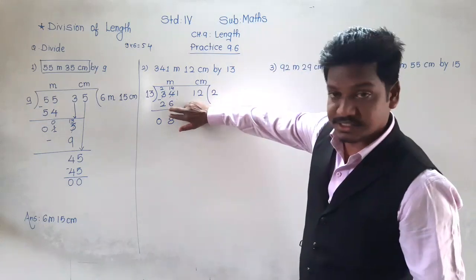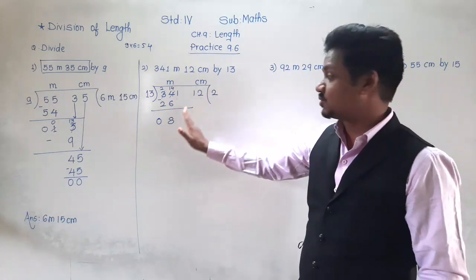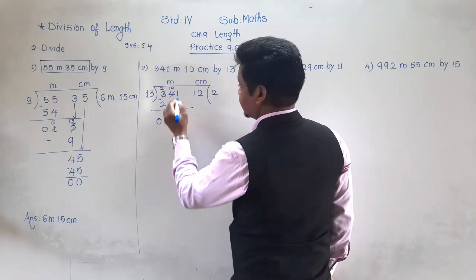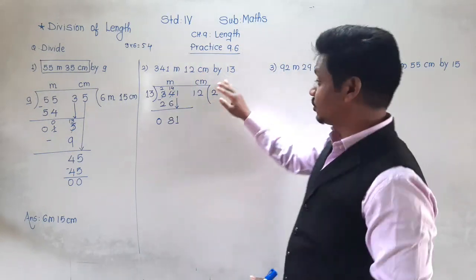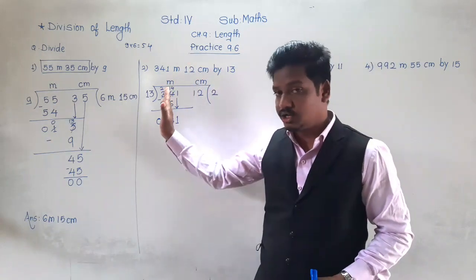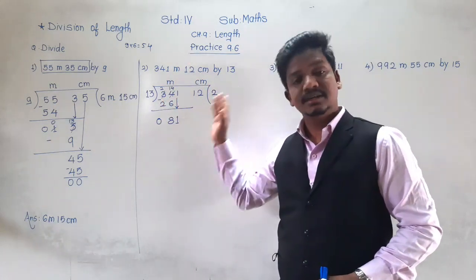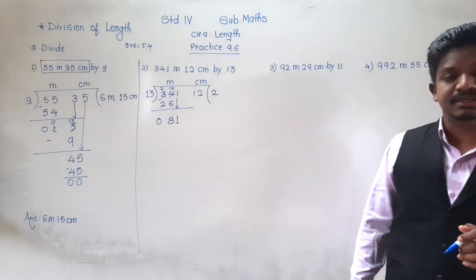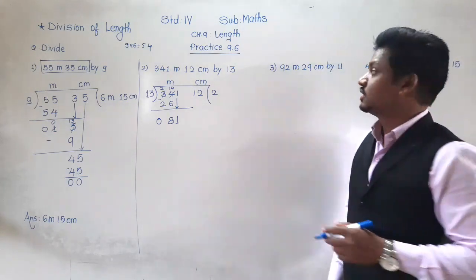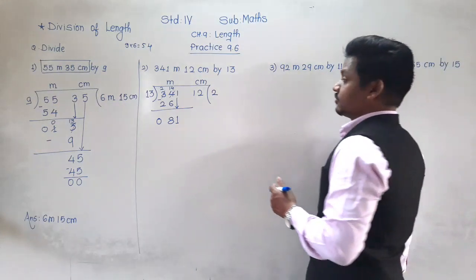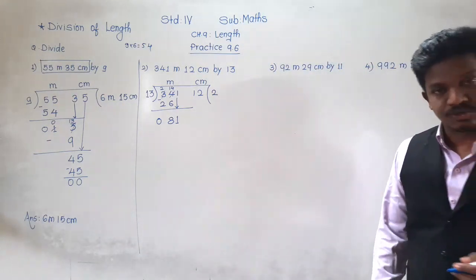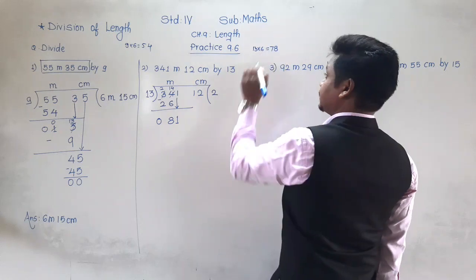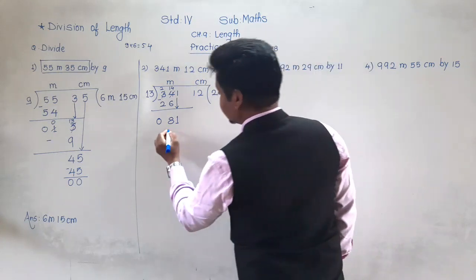Leave one line space in case you need to take a borrow later. Bring next digit down; we are still in the meter column. The number is now 81. Divide 81 by 13: the smaller number than 81 in the table of 13 is 78, since 13 sixes are 78. Subtract: 1 minus 8 not possible, take borrow from 8 — 1 becomes 11, 8 remains 7. 11 minus 8 is 3, 7 minus 7 is 0. Meter column is now complete.